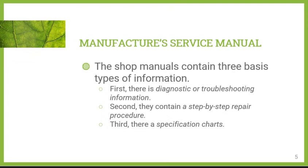The manufacturer's service manual — the shop manual — contains three basic types of information: first, diagnostic or troubleshooting information; second, step-by-step repair procedures; and third, specification charts. We'll look at each one.